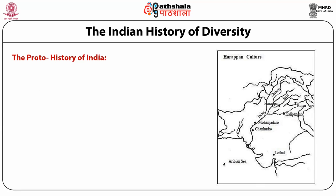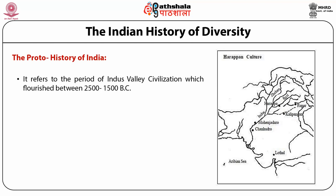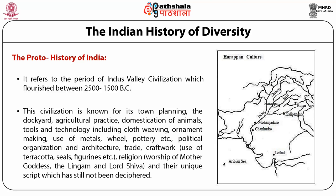The Indus Valley civilization in the western frontier marked the beginning of the proto-historic cultures of India. This was an advanced civilization which flourished between 2500 to 1500 BC. The Indus Valley civilization is known for its town planning, the dockyard, agricultural practice, domestication of animals, tools and technology including cloth weaving, ornament making, use of metals, wheels, pottery, political organization and architecture, trade, craft work, religion and their unique script which has still not been deciphered.